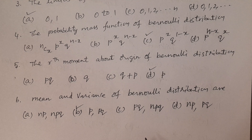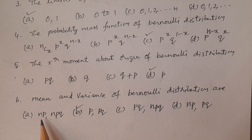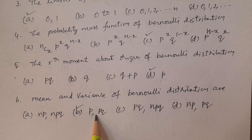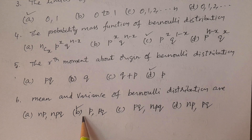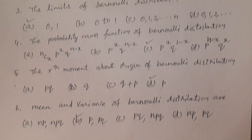So that is the simple logic: binomial distribution mean is np and variance is npq. Substitute n = 1 to get Bernoulli distribution mean = p and variance = pq. Answer is option B: mean p, variance pq for Bernoulli distribution.